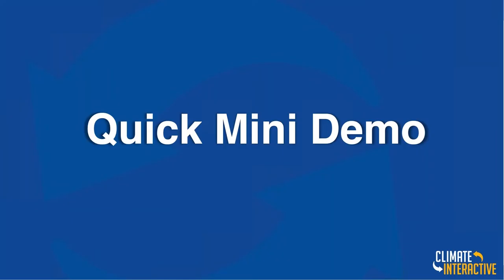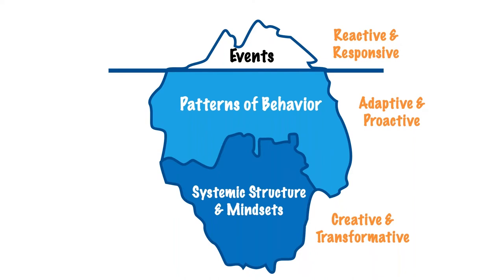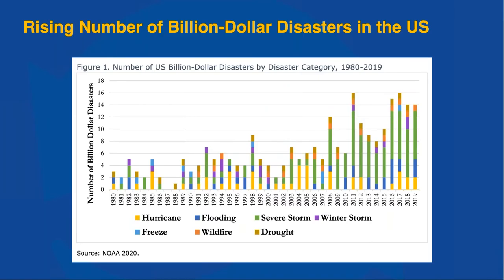Those are the two motivations. How do we tackle this using system dynamics? With system dynamics, we don't just react to headlines like 'it's going to be $7.9 trillion by 2050.' We don't just react to patterns of behavior. We want to be at the bottom of the iceberg. What is the systemic structure? What is the feedback structure? What are the accumulations of stock and flow dynamics that we should be considering as we think about how to change long-term behavior?